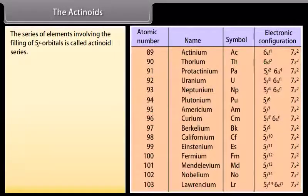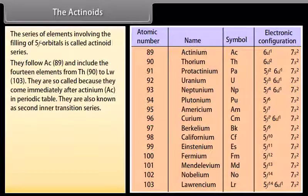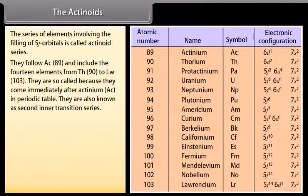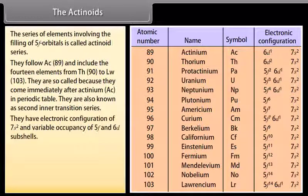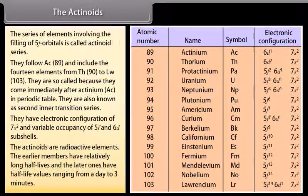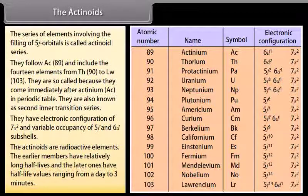The series of elements involving the filling of 5F orbitals is called the actinoid series. They follow actinium and include 14 elements from thorium to lawrencium. They are so called because they come immediately after actinium in the periodic table. They are also known as the second inner transition series, with an electronic configuration of 7s² and variable occupancy of 5F and 6D sub-shells. The actinoids are radioactive elements; earlier members have relatively long half-lives, while the latter ones have half-lives ranging from 1 day to 3 minutes.